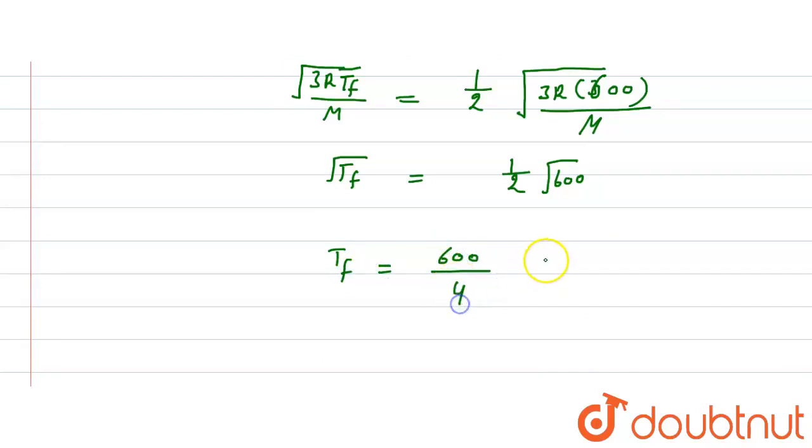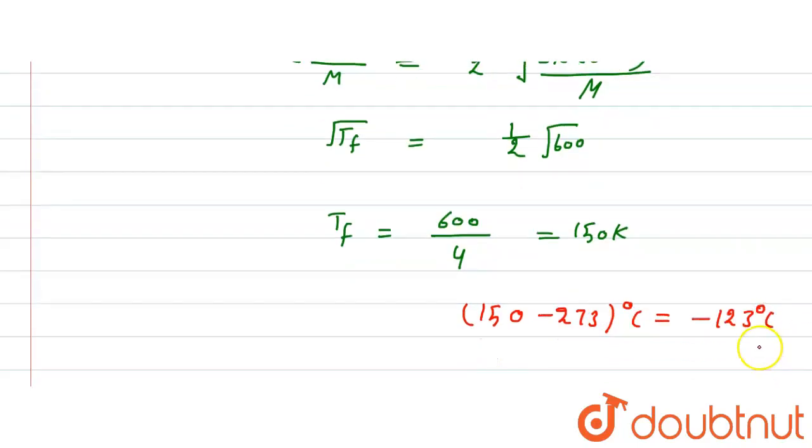600 upon 4, and this is equal to 150 Kelvin. Now convert to Celsius, so we can write 150 minus 273 degrees Celsius. So here it is equal to minus 123 degrees Celsius. So this is the solution, the correct option.